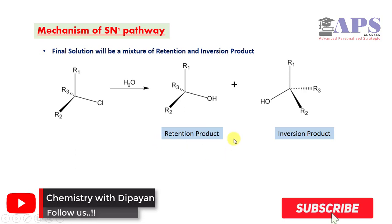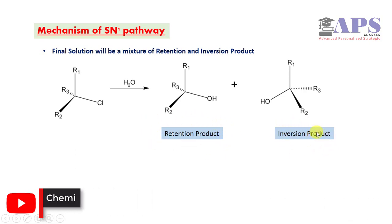These products are named retention product and inversion product. If position of leaving group in alkyl halide and position of nucleophile in product are same, it's retention. If opposite to each other, it will be called inversion product.